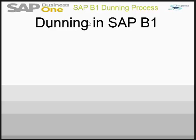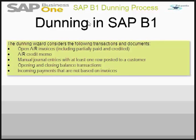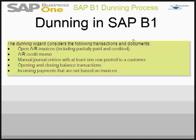In addition, the Dunning Wizard keeps track of customers' payment behavior within the company and delivers this important information to appropriate organizations. The Dunning Wizard applies to open AR invoices, AR credit memos, manual general entries, open and closed balance transactions, or incoming payments that are not based on invoices.